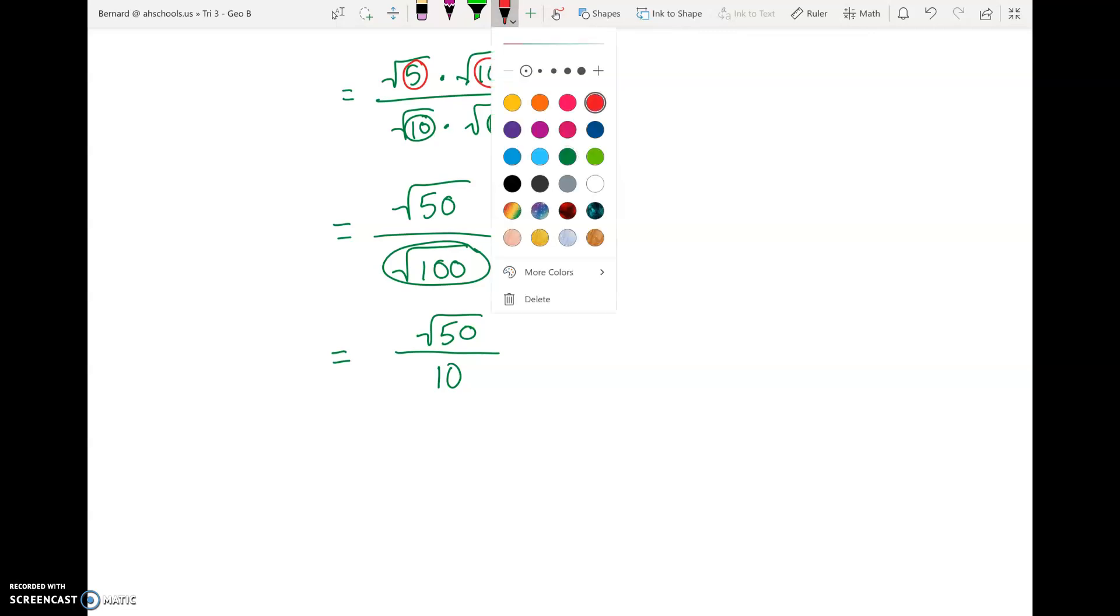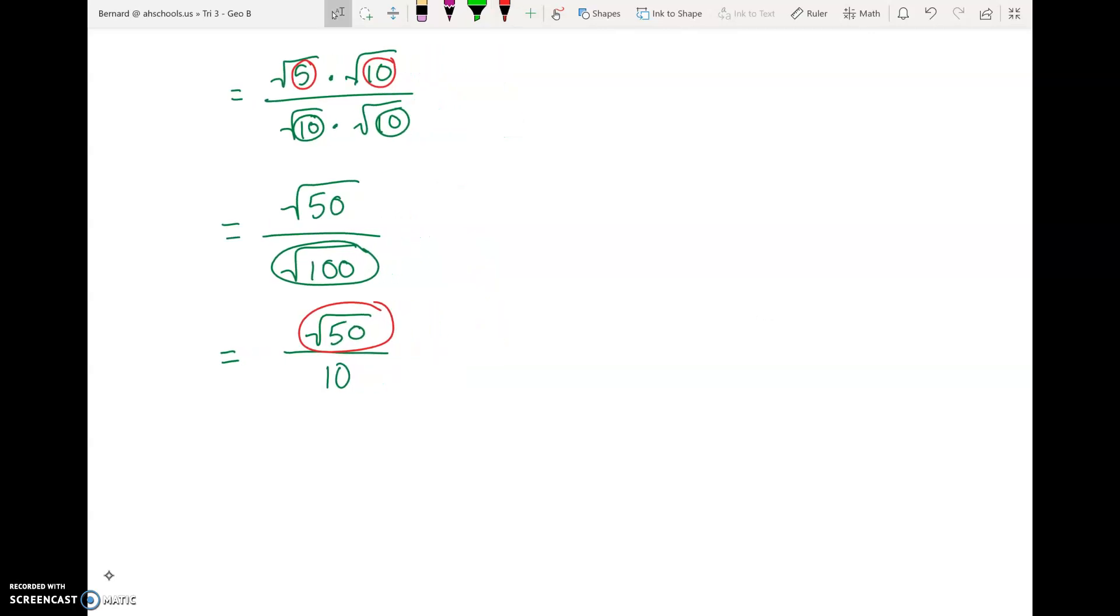And so the next step then to continue to finish this up is now we've got to simplify this square root of 50. And 50 is not a perfect square. And so if we just put this into our calculator, we'll get a decimal. Obviously, we don't want that. And so we want to break this down. And we need to look for the biggest perfect square that fits into 50.